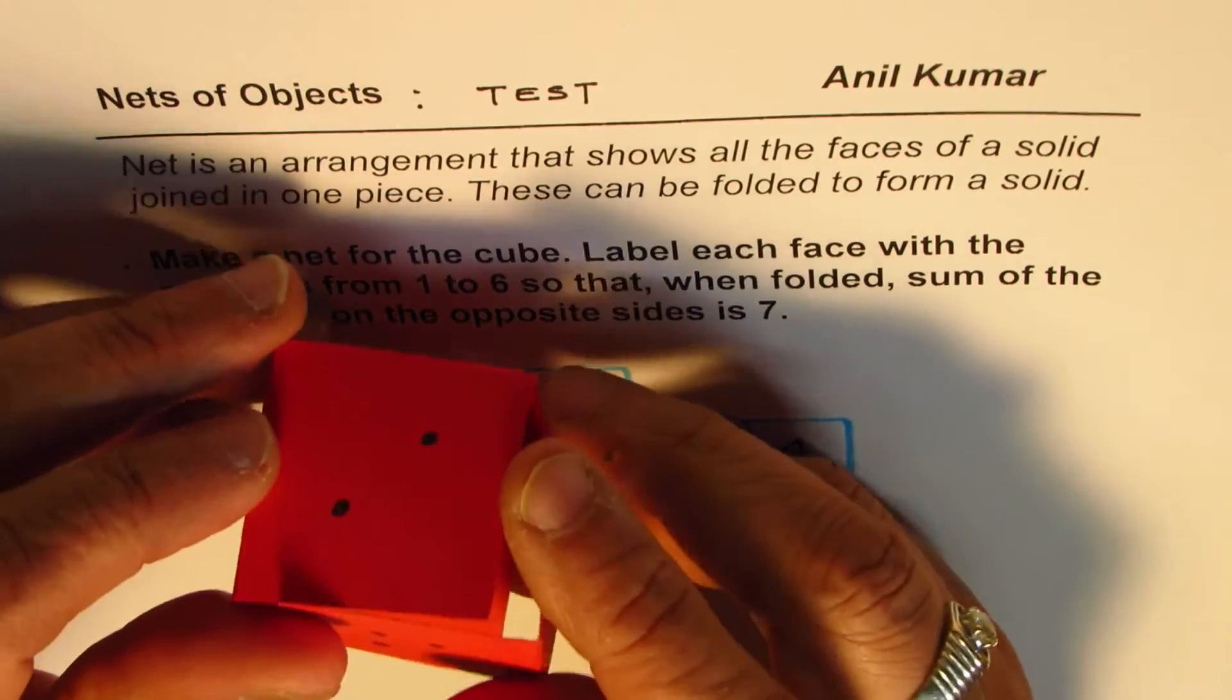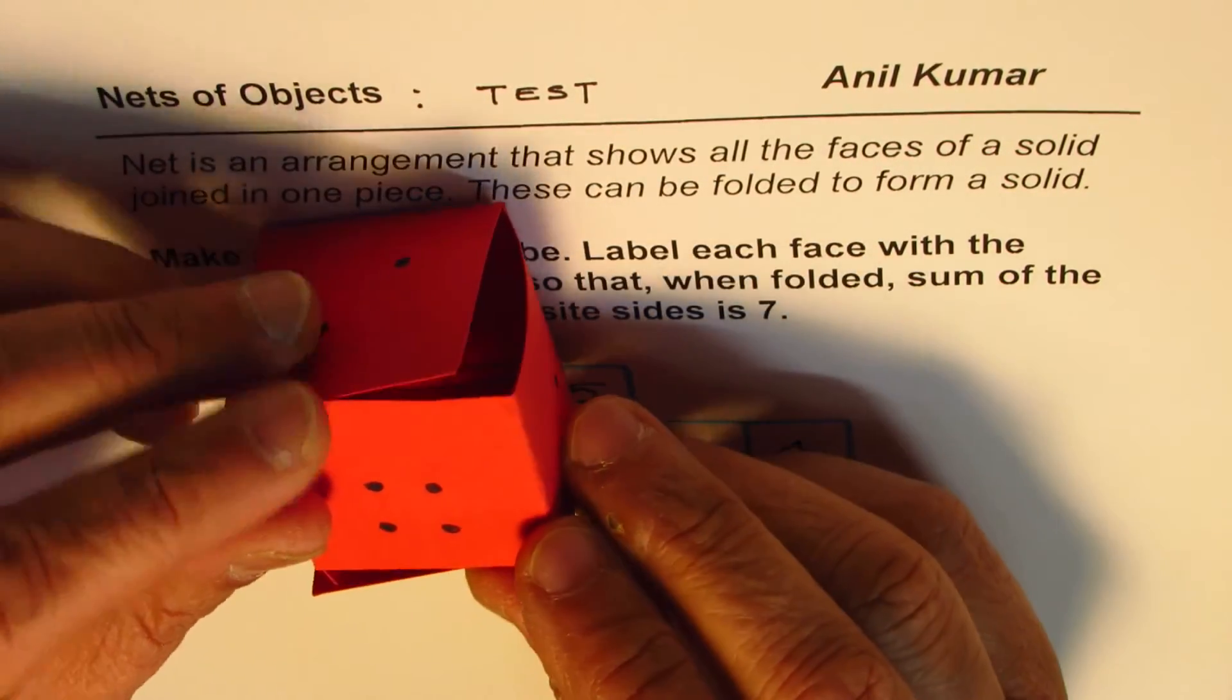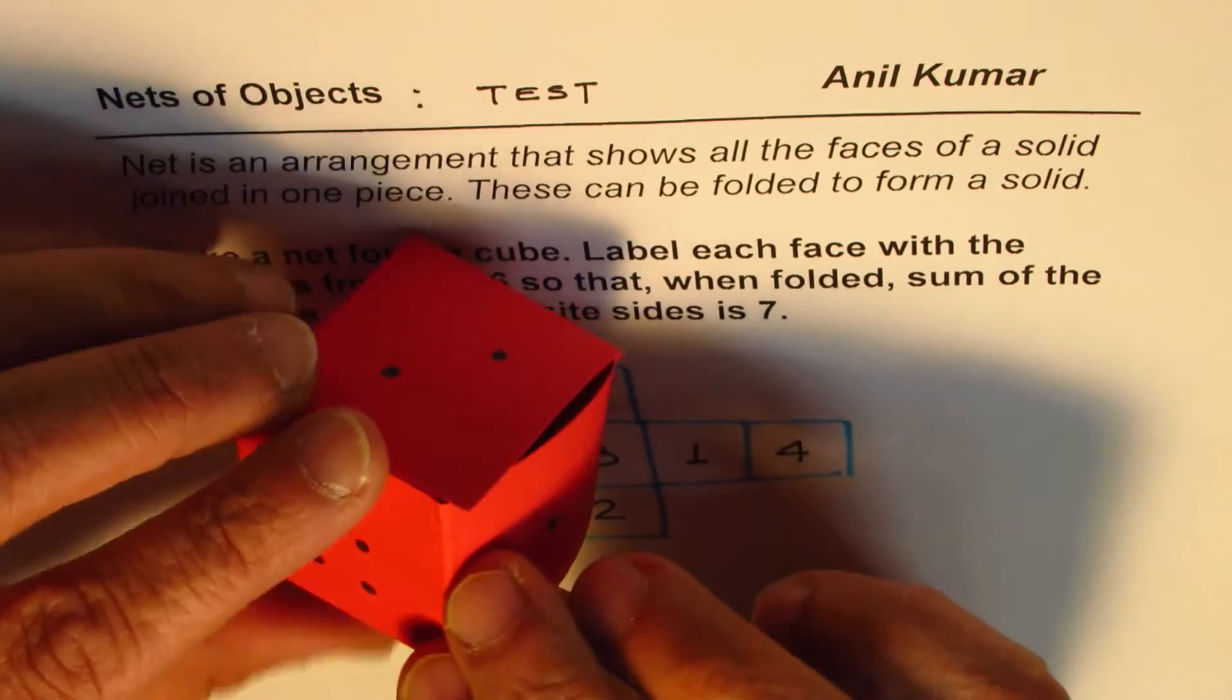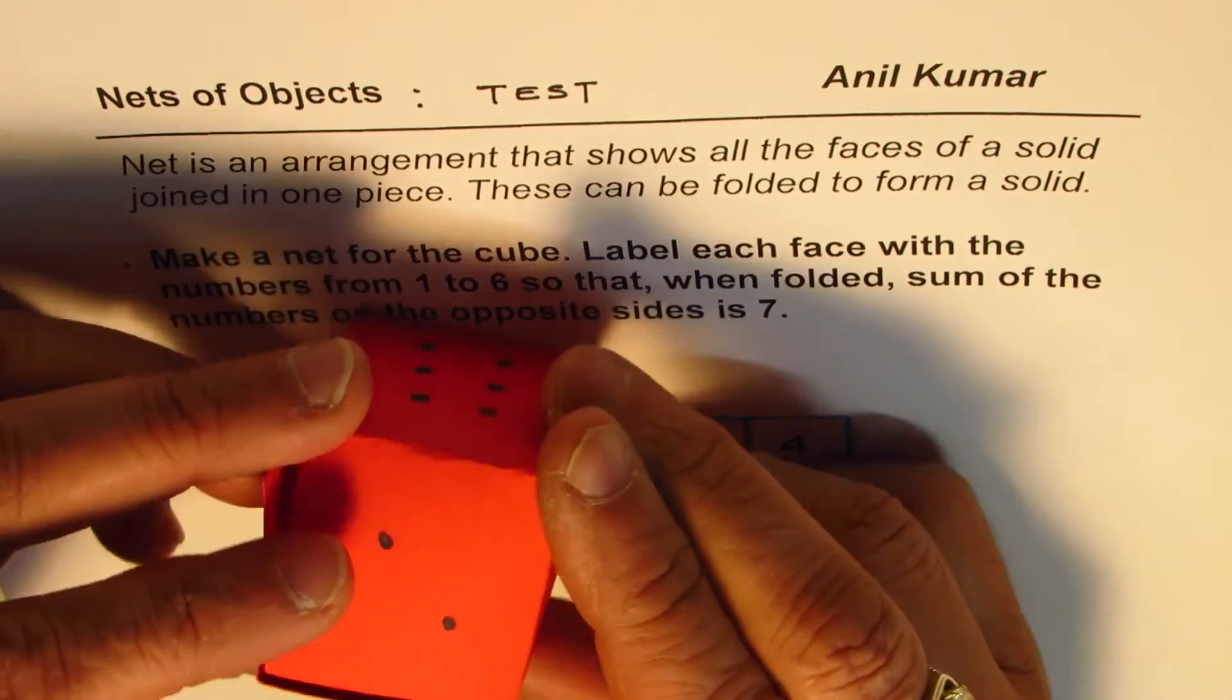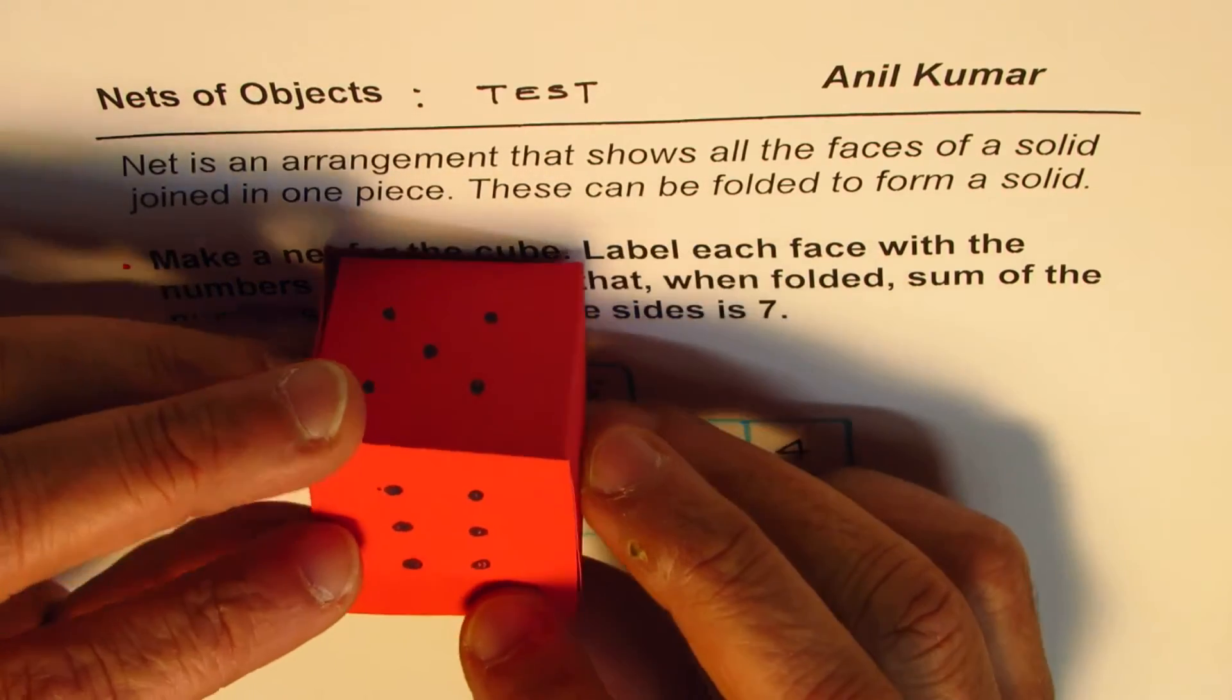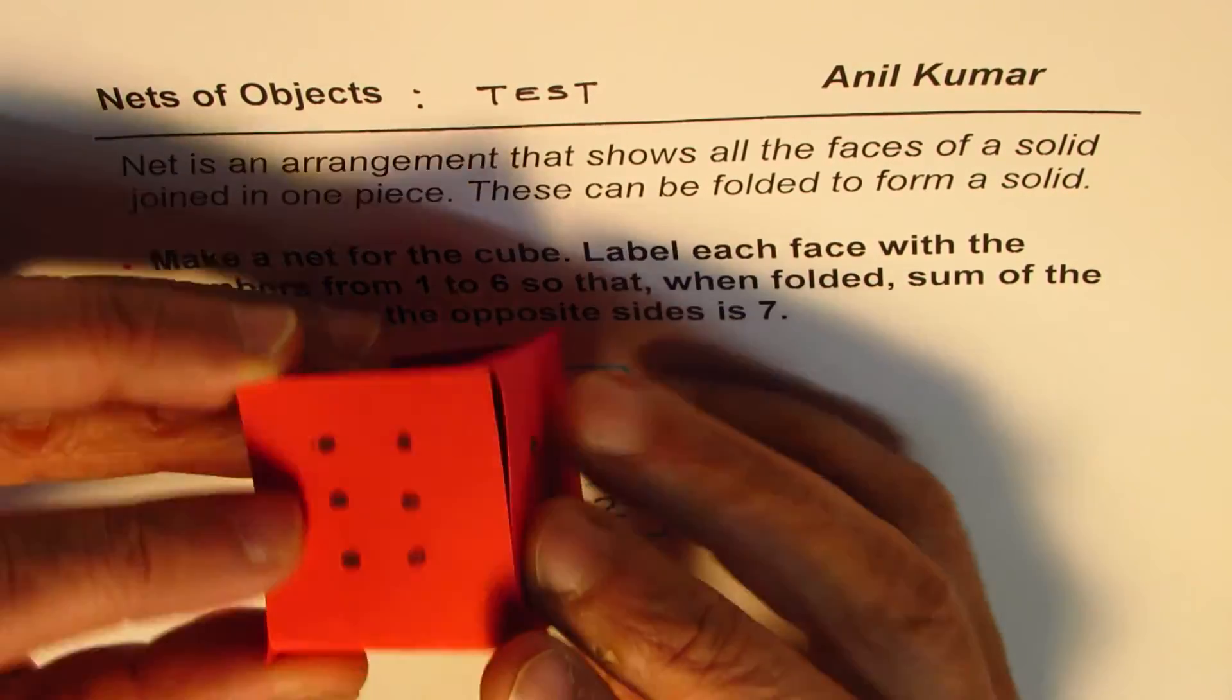If you fold it, this is 3, opposite to 3 will be the face at the bottom, which is 4, so 3 plus 4 is 7. The side is 1 and opposite to 1 should be 6. Let me show you, the side opposite 6, the other two are 5 and 2.